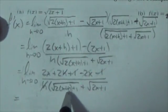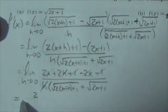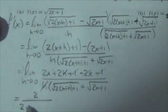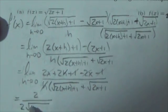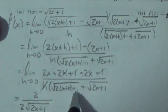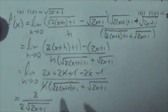When I take the limit and let h go to 0, this h goes to 0. I've still got a 2 in the numerator and I've got two of those radicals in the denominator. It'll be 2 times the square root of 2x plus 1 because the h went to 0.